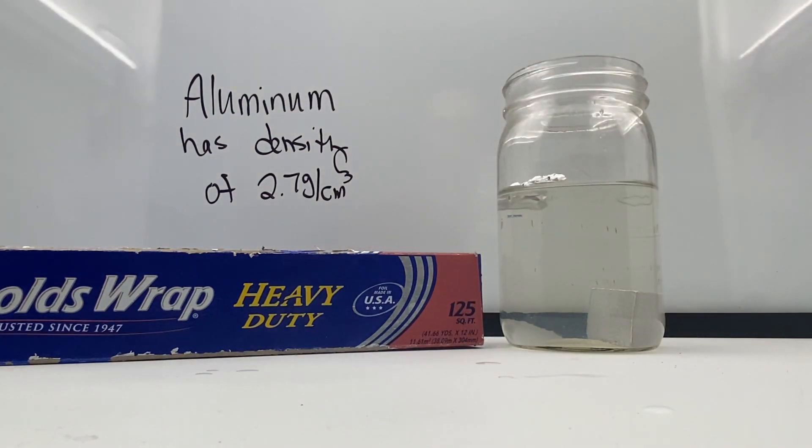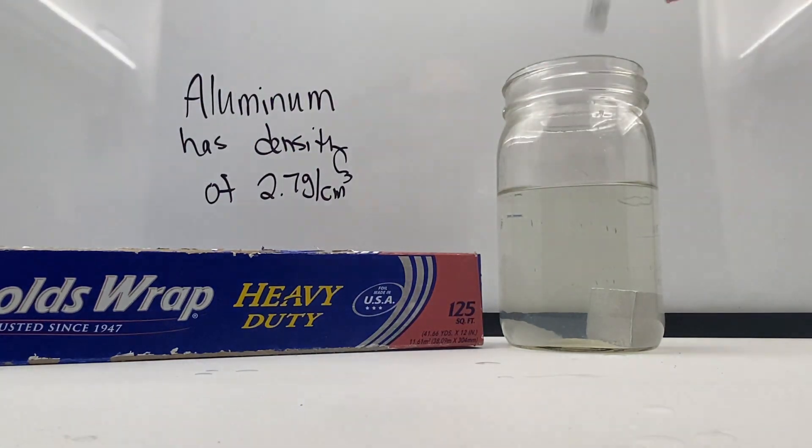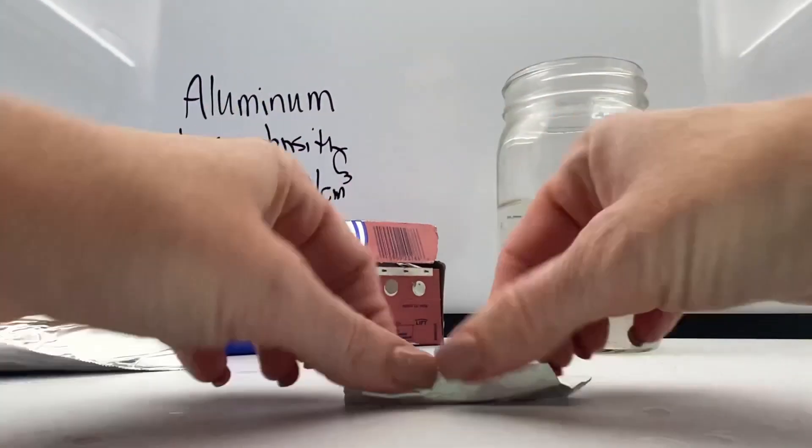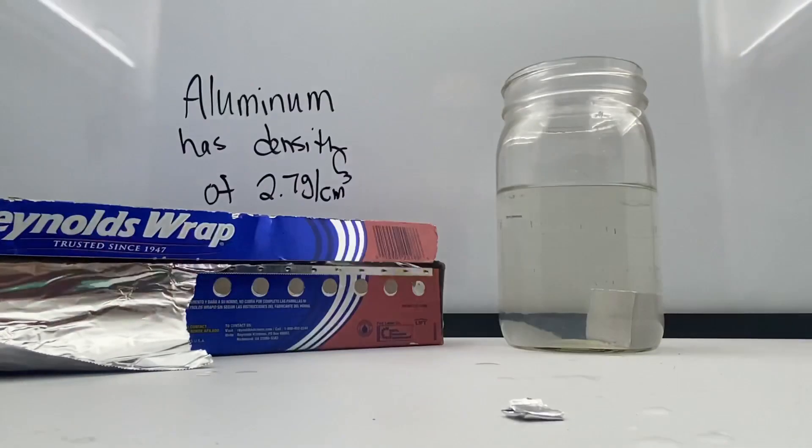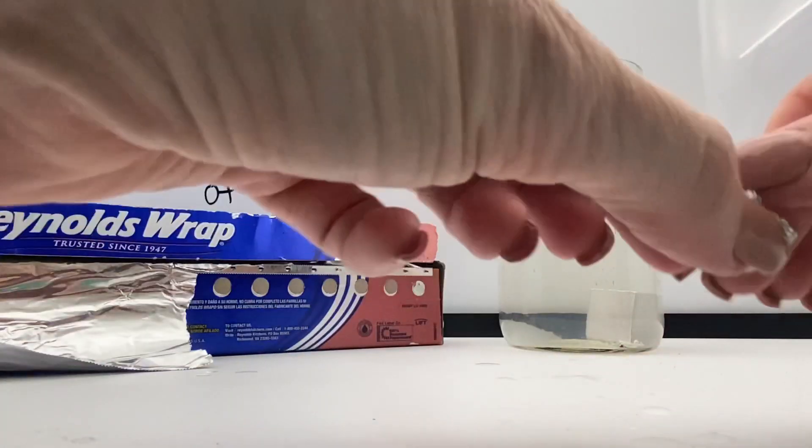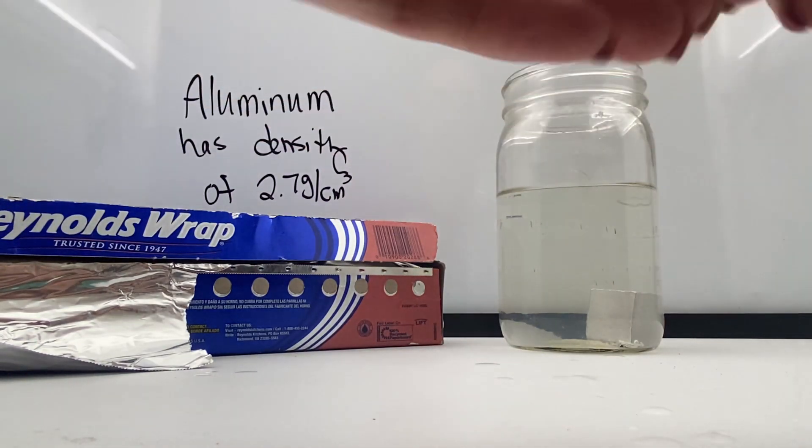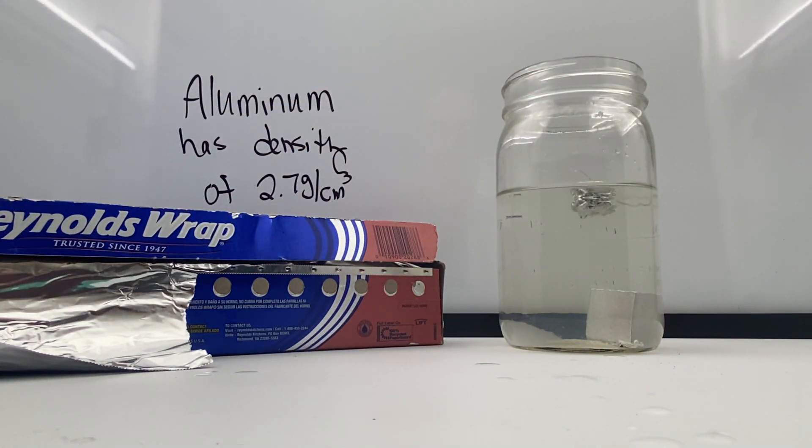Even if I ball it up, it still floats. Even if I ball it tighter, it still floats. If I want to get it to sink, I have to get it really compacted in there. Now that mass is compacted, it will sink, but this other piece will float.